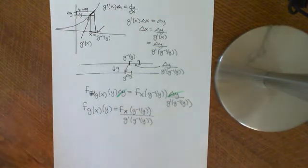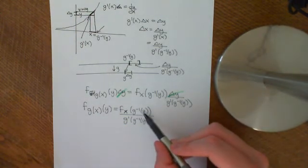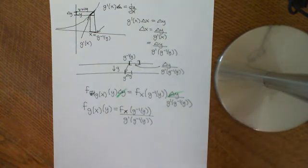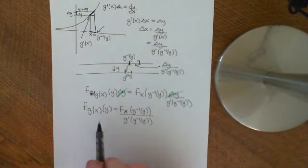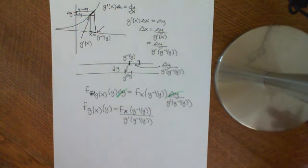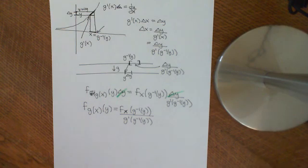Providing, of course, that g inverse of y exists — if it does not exist, then the PDF is just equal to zero. This gives us a way of finding the probability density function of a transformed random variable from the probability density function of the original random variable.